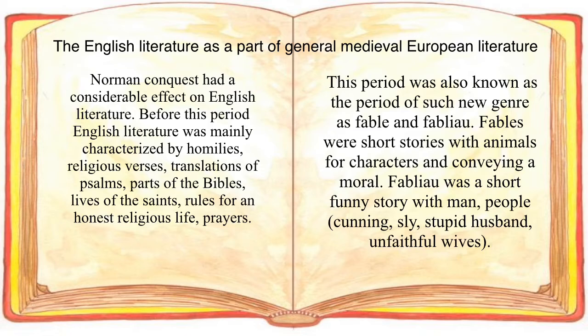The Norman Conquest had a considerable effect on English literature. Before this period, English literature was mainly characterized by homilies, religious verses, translation of psalms, parts of the Bible, lives of the saints, rules for an honest religious life, and prayers. This period was also known as the period of such new genres as fable and fabliaux.